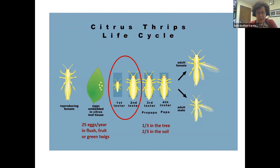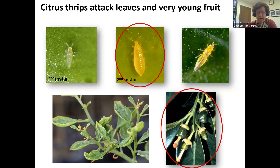Citrus thrips attack leaves and very young fruit. Most of the time we tell you don't worry about the leaves. Of all the stages, the second instar is the most damaging to the citrus, probably because it has bigger mouth parts, and so that is the target of control. Often people begin spraying before they see second instars, knowing that the life cycle is fairly short — they go from first to second pretty quickly.